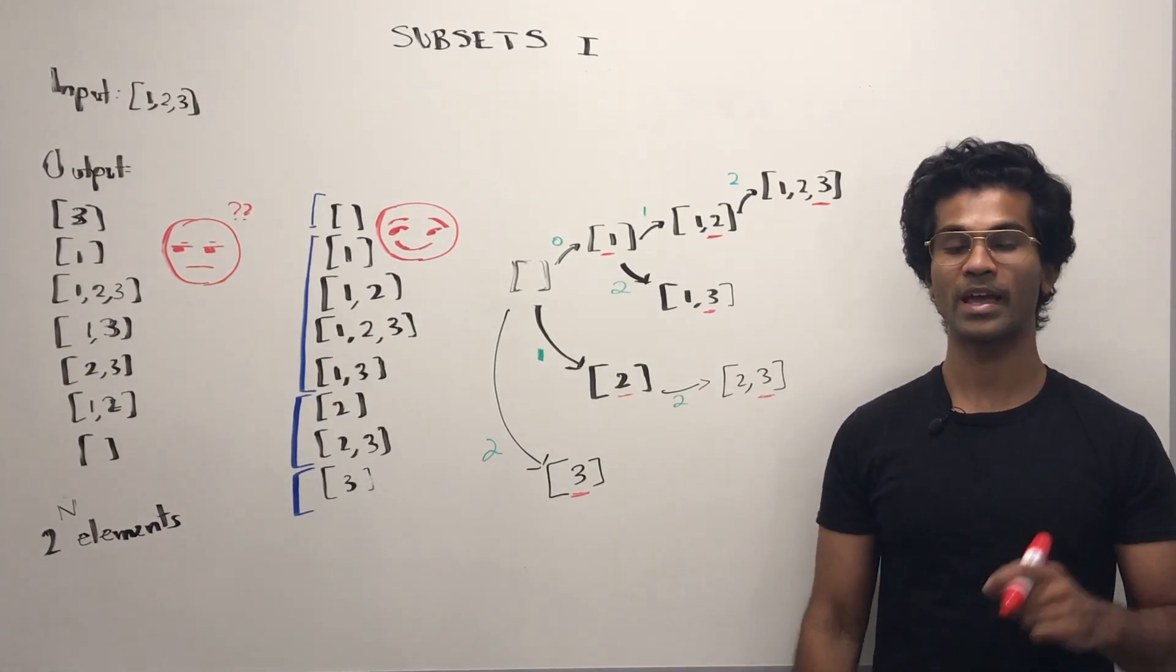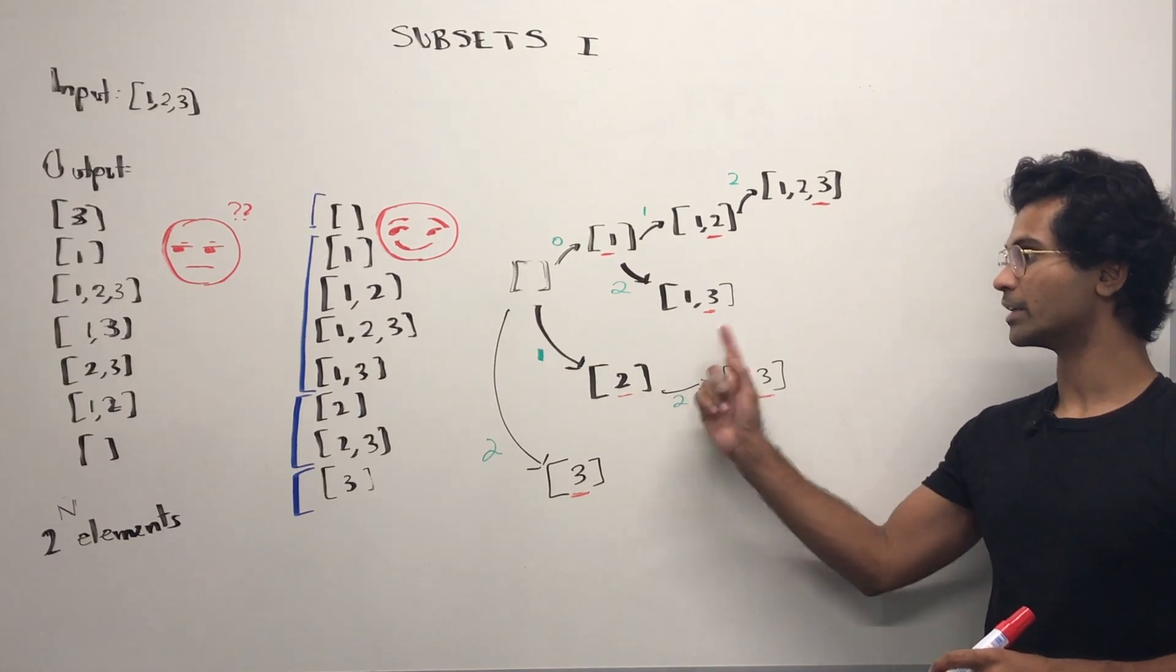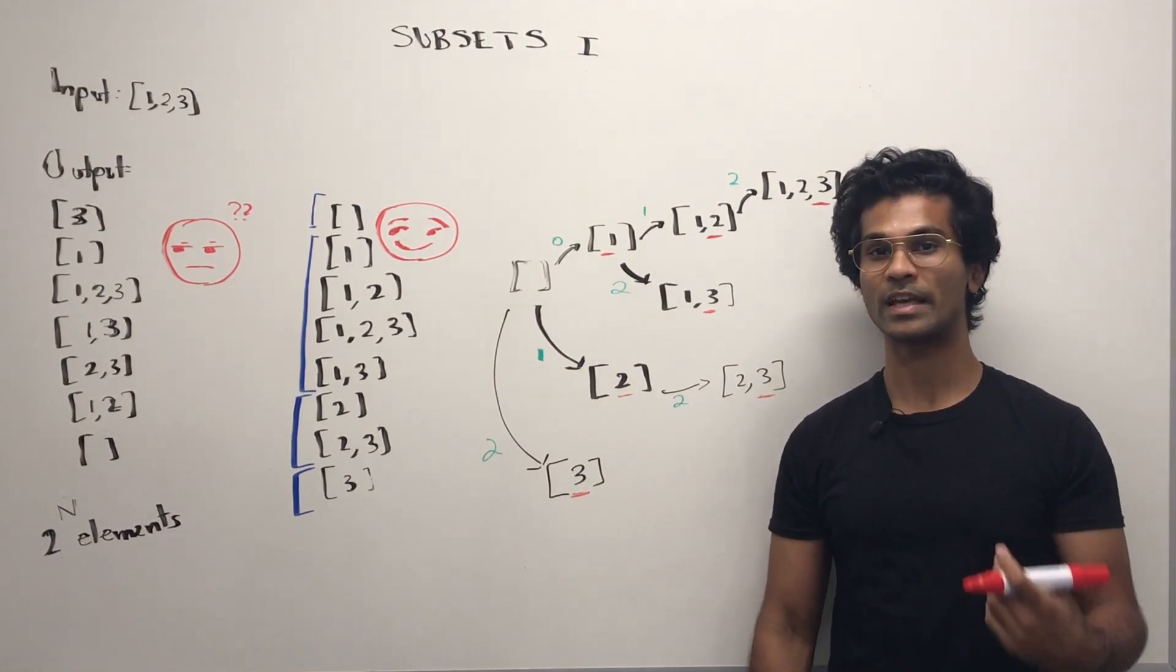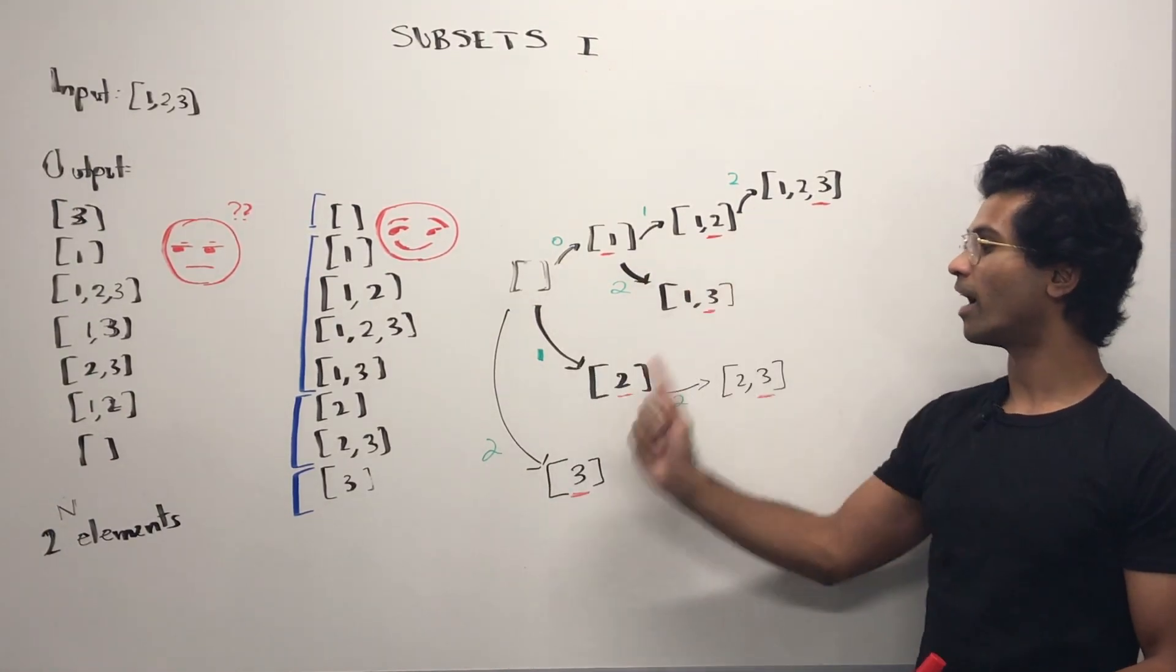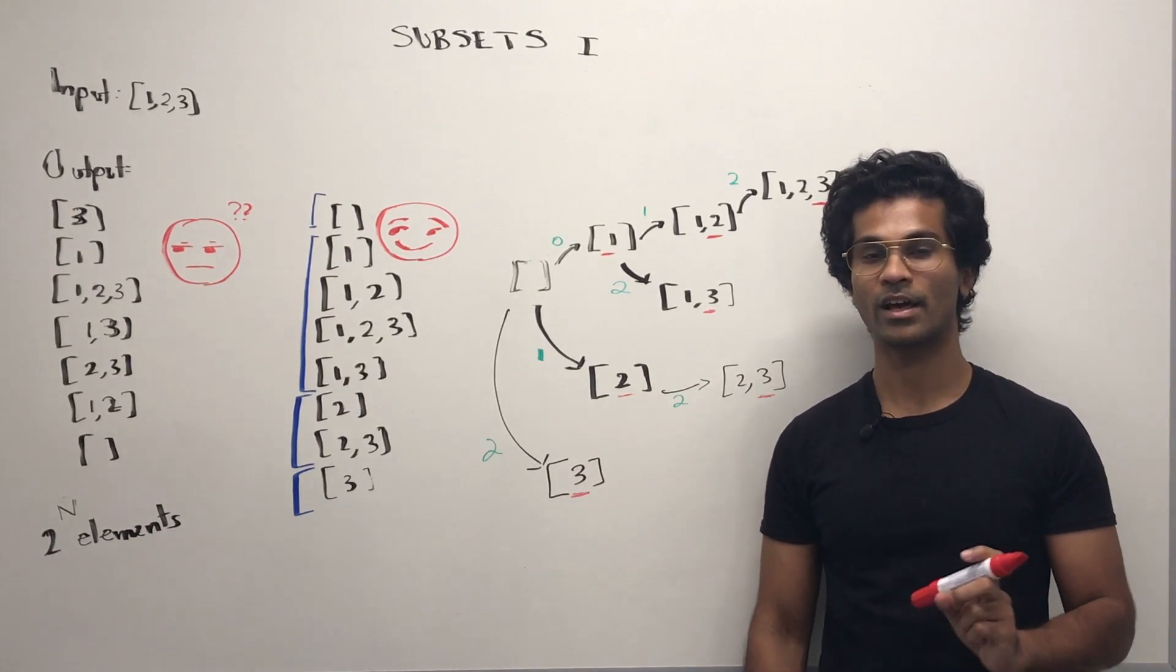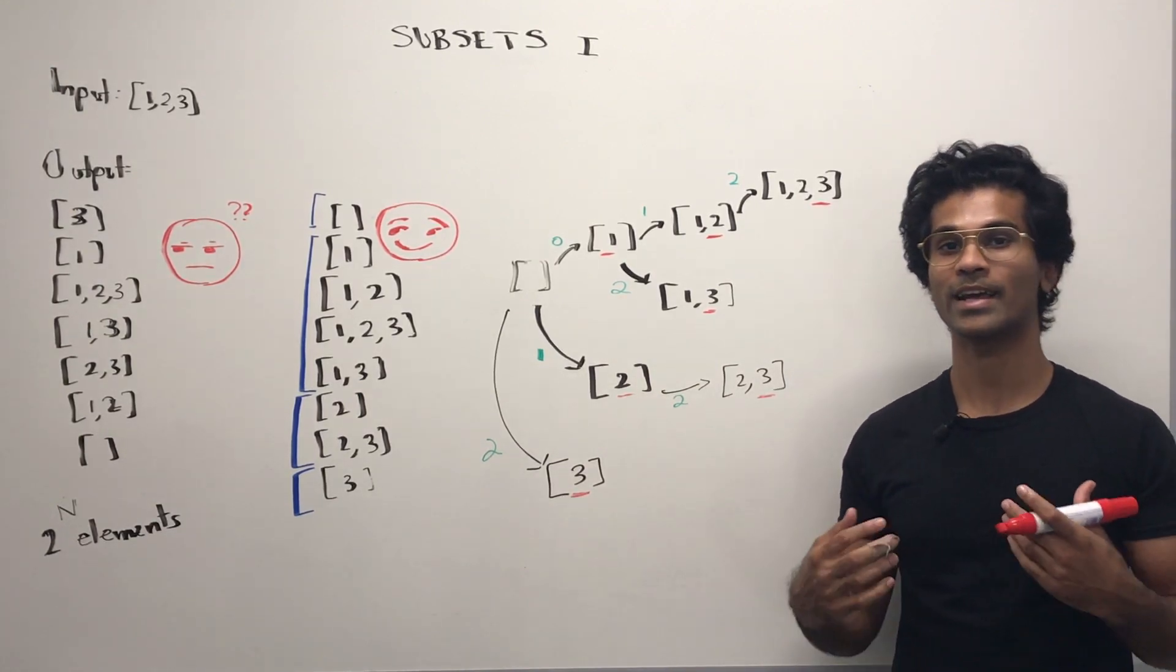If you noticed, every new number that's been added has been underlined in red. And at the same time in green, I've highlighted the index in the array that corresponds to that element.